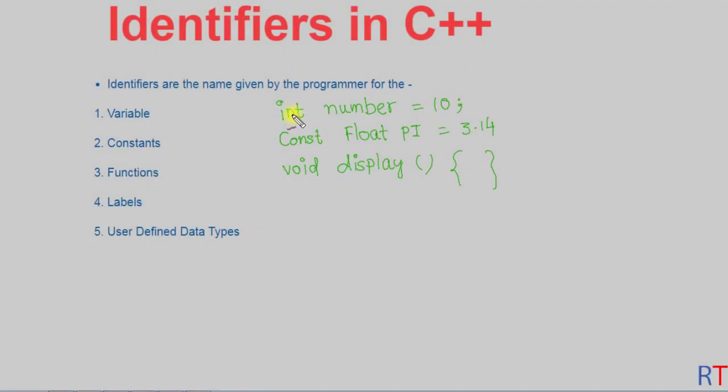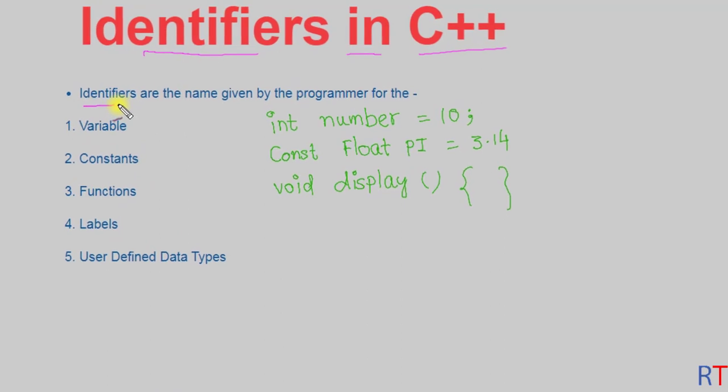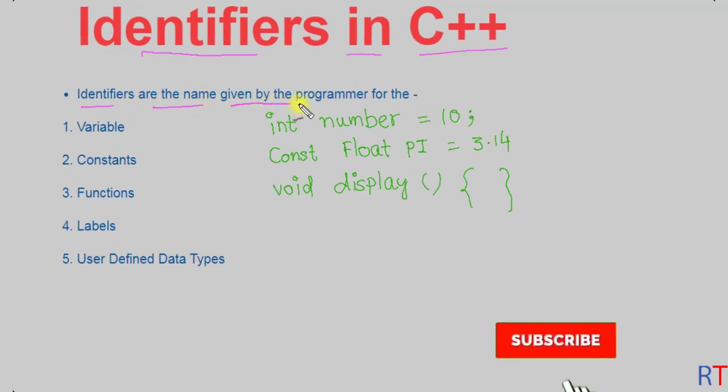Hey, what's up guys? In this video we're going to talk about identifiers in C++ programming. Identifiers are the names given by the programmer for variables, constants, functions, labels, or even user-defined data types.